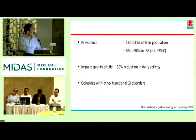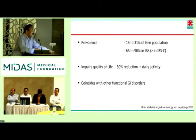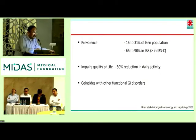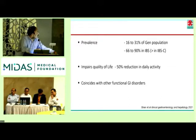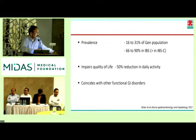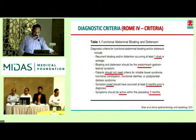What is the prevalence in the general population? 16 to 31% — almost 3 out of 10 normal persons would complain of bloating. 2 out of 3 persons with IBS would say that gas is there. It impairs quality of life in 50%, which is a significant number, and it coincides with other GI disorders.